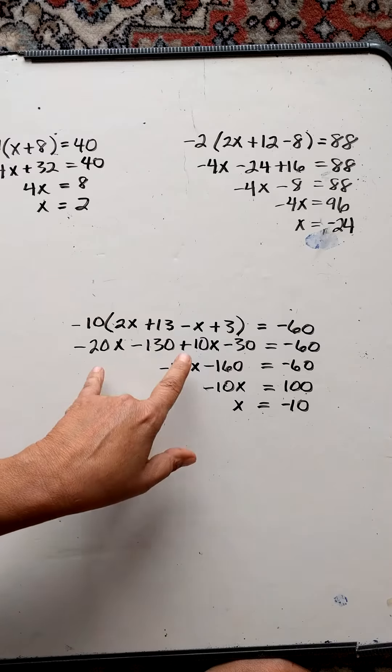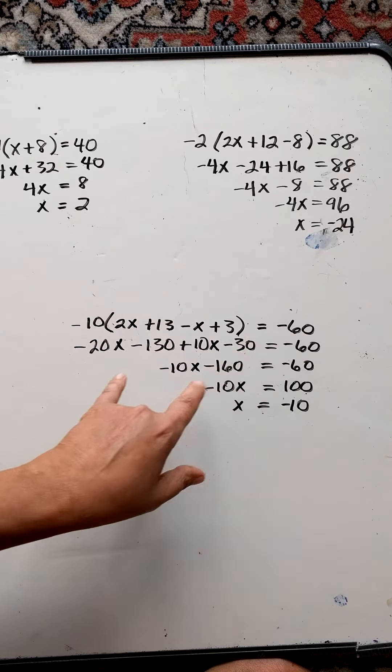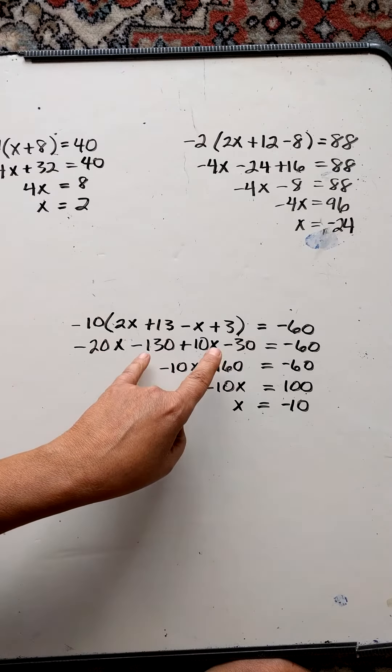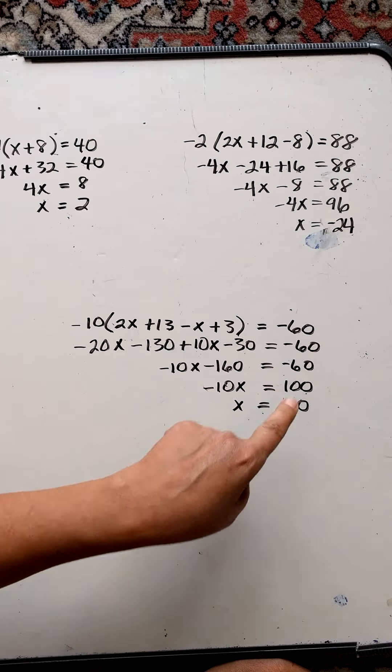Then I combine like terms here. These two terms are like terms, and these two terms are like terms. So negative 20x plus 10x is negative 10x. Negative 130 minus 30 is a negative 160. And that equals negative 60.